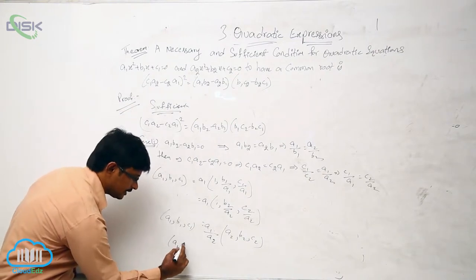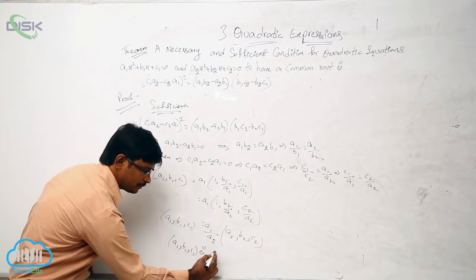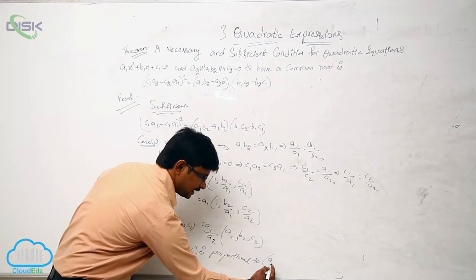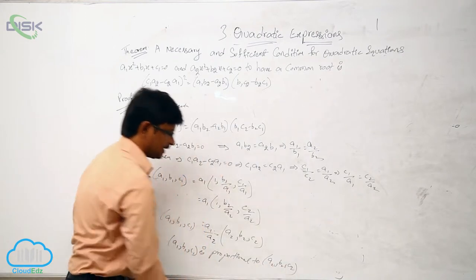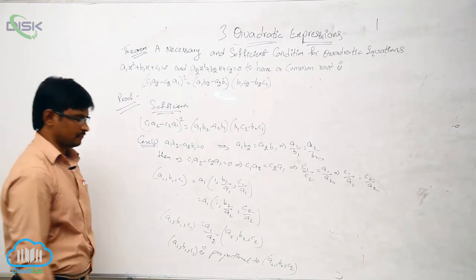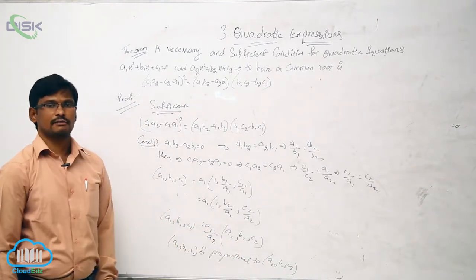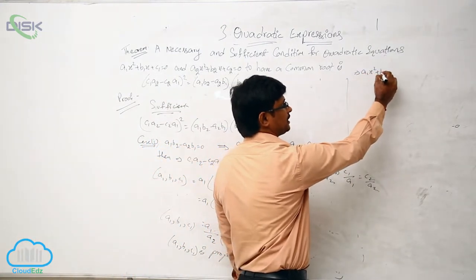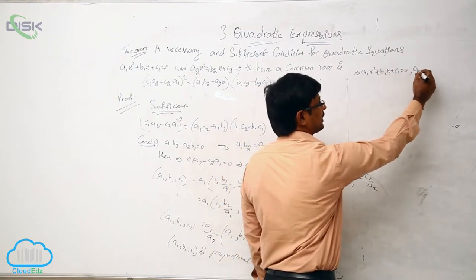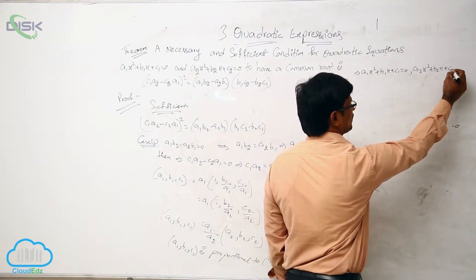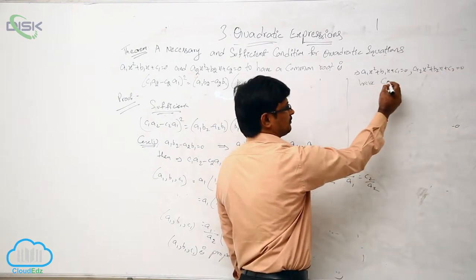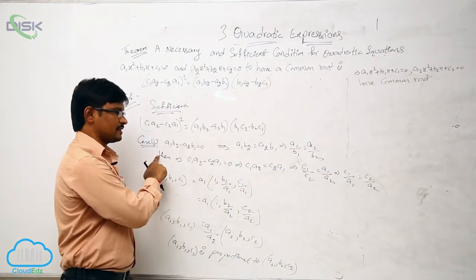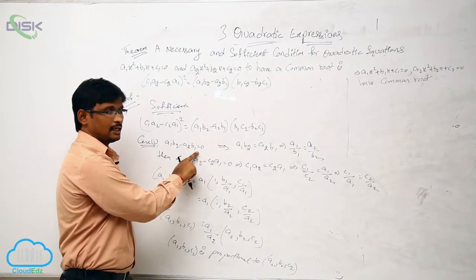So (a1, b1, c1) = (a1/a2) times (a2, b2, c2), which means (a1, b1, c1) is proportional to (a2, b2, c2). This means the coefficients of the first quadratic equation are proportional to the coefficients of the second quadratic equation, which means a1·x² + b1·x + c1 = 0 and a2·x² + b2·x + c2 = 0 have a common root. This completes Case 1.